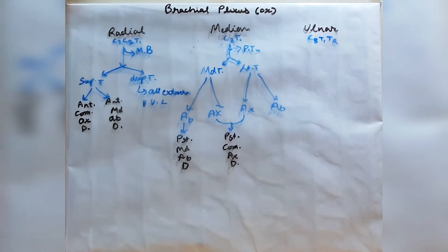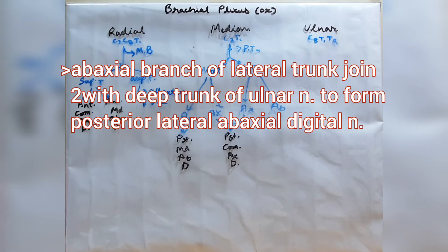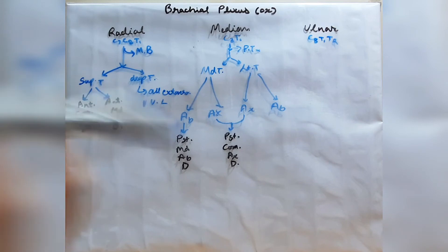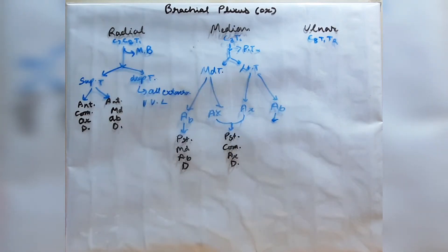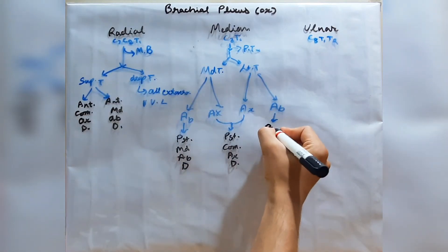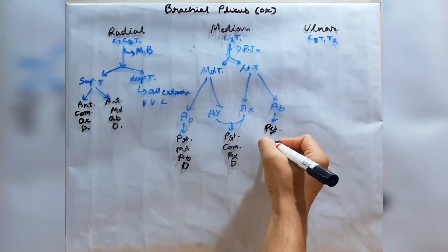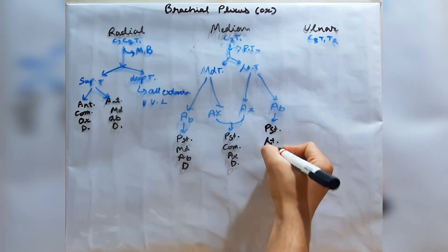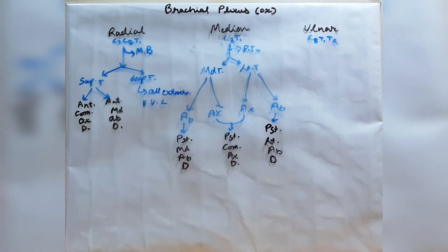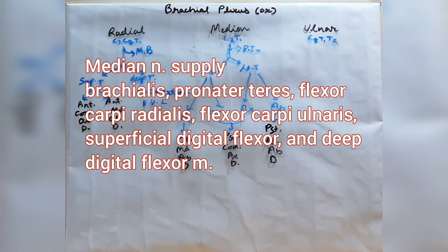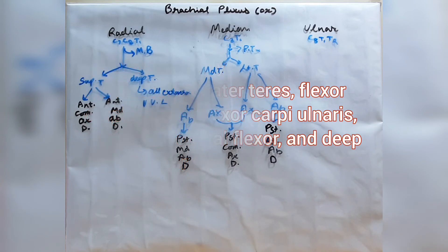The abaxial branch of the lateral trunk of the median nerve joins with the ulnar nerve to form the posterior lateral abaxial digital branch. In summary, the median nerve supplies the brachialis muscle, pronator teres, flexor carpi radialis, flexor carpi ulnaris, superficial digital flexor, and deep digital flexor.